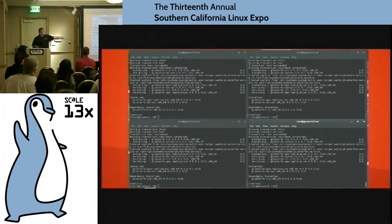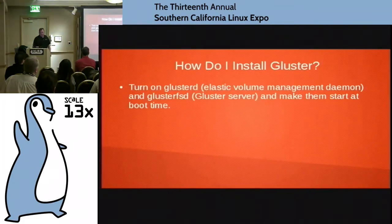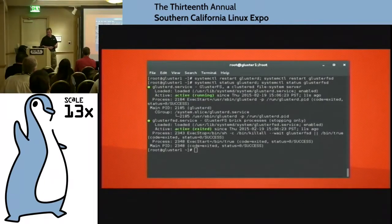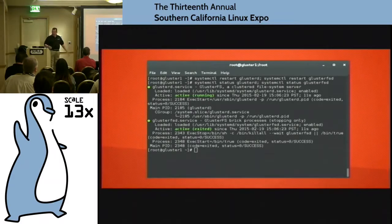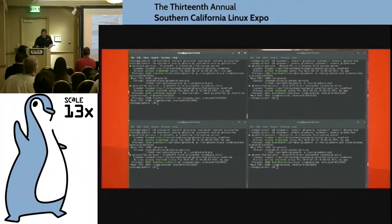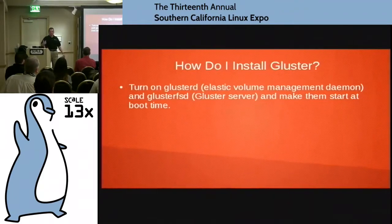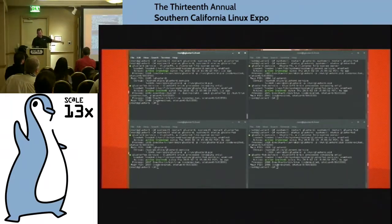You want to do that across all your systems. Then make sure the services are running. By default the Gluster services should be turned on. In the Fedora world it's systemctl enable service_name. I did systemctl restart glusterd and systemctl restart glusterfsd. Then check status on them to make sure they're actually running. The glusterd service is for elastic volume management, and glusterfsd is the actual Gluster service. Make sure those are turned on.